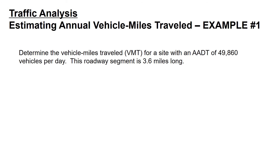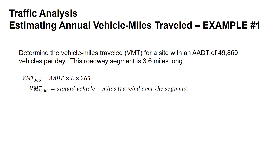In this example, we're asked to determine the vehicle miles traveled, or VMT, for a site with an AADT of 49,860 vehicles per day. We're told this roadway segment is 3.6 miles long. Our equation: VMT is equal to the AADT times the length times 365. VMT sub 365 is the annual vehicle miles traveled over the segment.